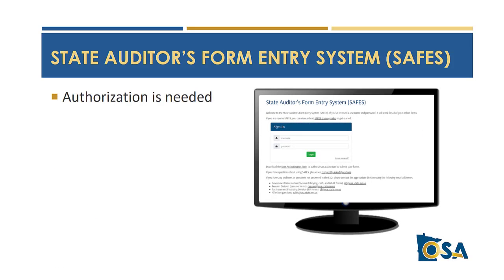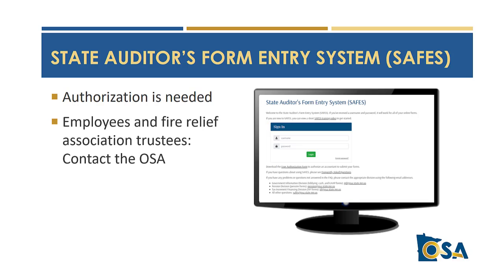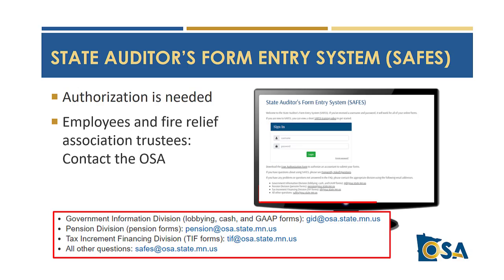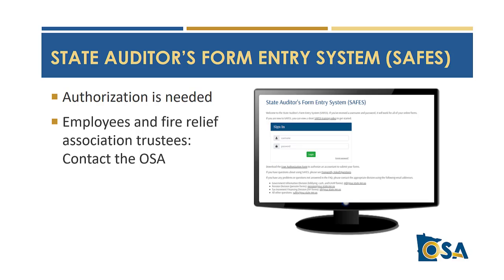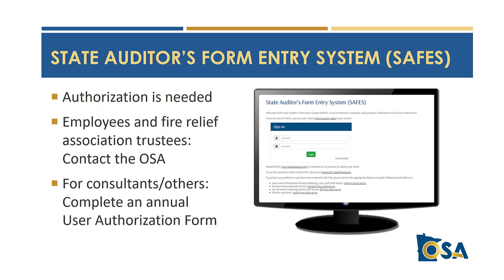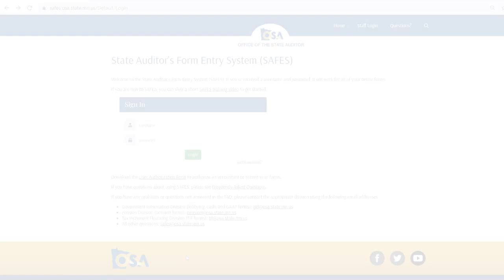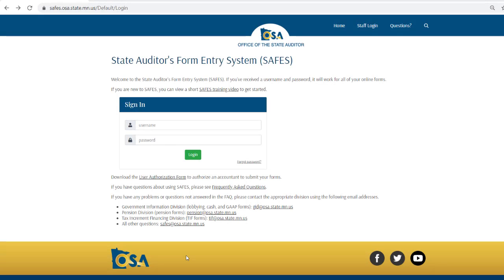All users need authorization before they can use SAFES. Government entity employees and Fire Relief Association trustees must contact the OSA to arrange access. Contact emails are listed on the SAFES login page and phone numbers are given at the end of this video. An annual user authorization form must be completed to grant access and permission for consultants and others who work on behalf of a government entity to access and submit forms. The SAFES user authorization form is found on the SAFES login page by clicking the SAFES authorization form link.